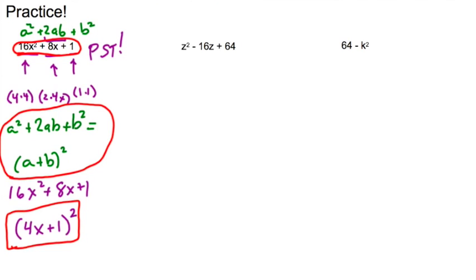Let's take a look at this next example, z² - 16z + 64. Here again, I'm looking to see if it follows the format a² - 2ab + b². I'm using minus because I see there's a subtraction sign underneath. Here we go, a² minus 2ab plus b².